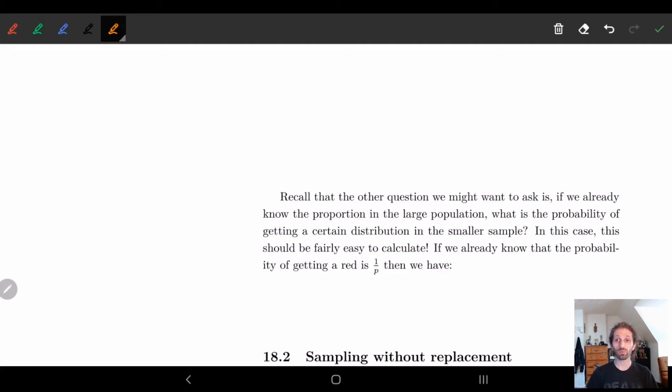Like another thing what we want to do is how does this affect the global population? So we want to know what the actual probability is. So we want to know what is the probability of getting a certain distribution in the sample size.